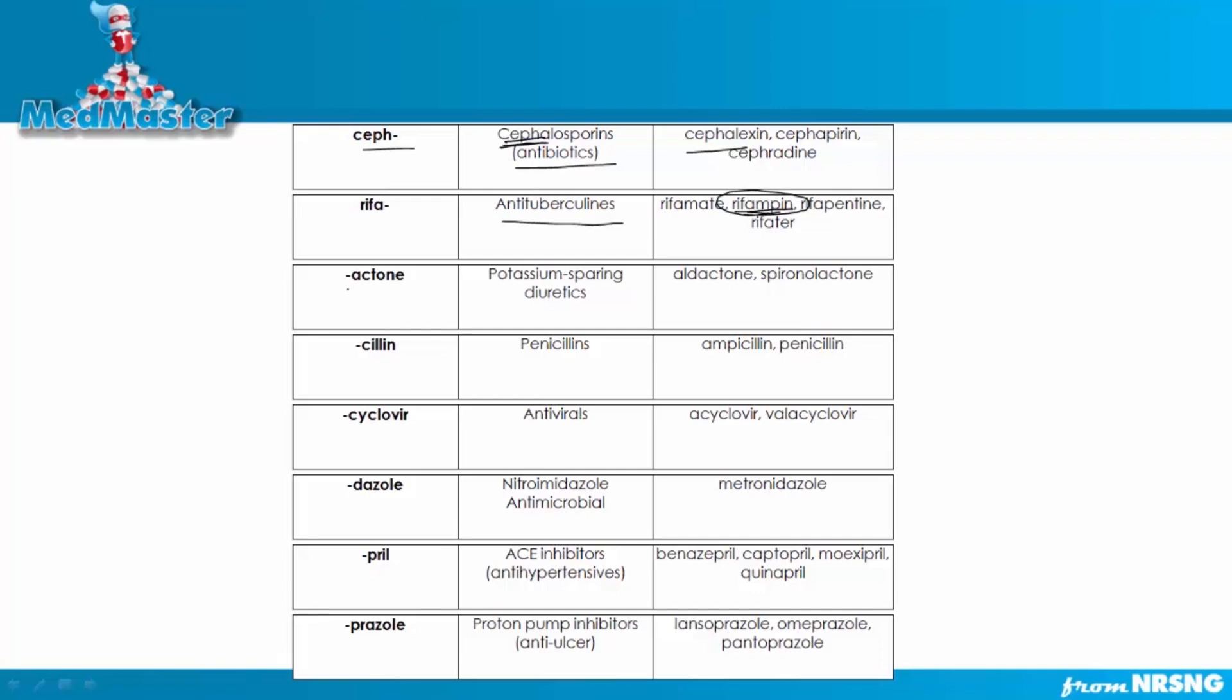Now, some of the suffixes. One of the suffixes you need to know is Actone, okay? Actone, as in Aldactone and Spironolactone, are potassium-sparing diuretics. These are important diuretics to understand because the NCLEX likes to test you about potassium levels. And specifically, they're going to ask you about Spironolactone, most likely. So it's important to understand that a patient may have increased potassium levels because this is a potassium-sparing diuretic.